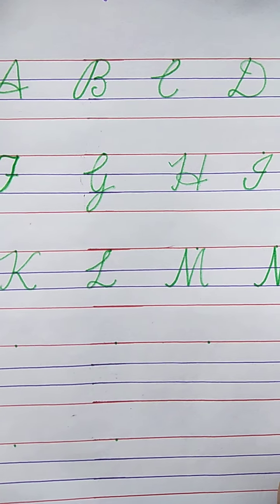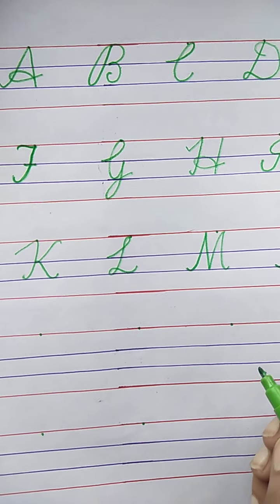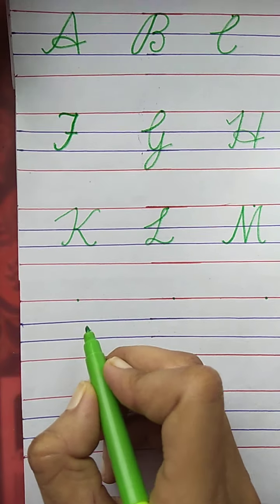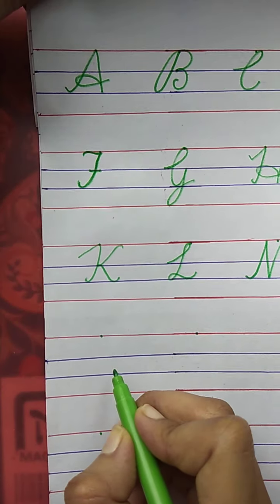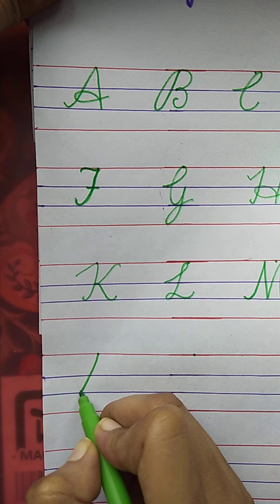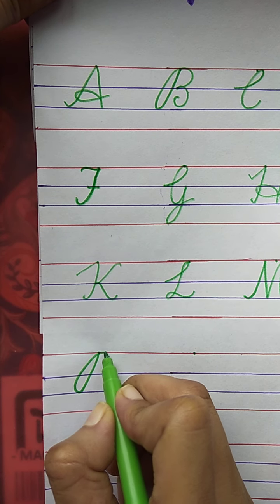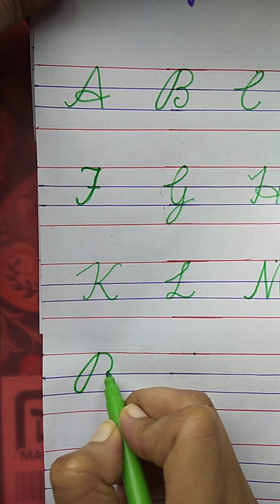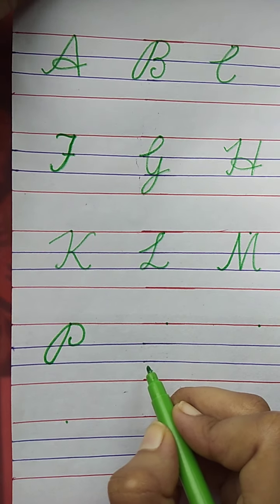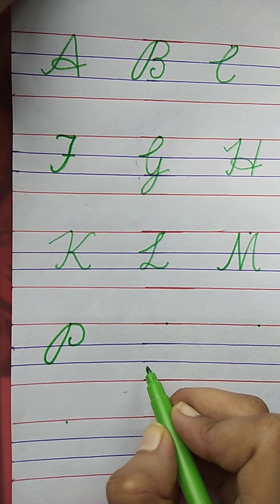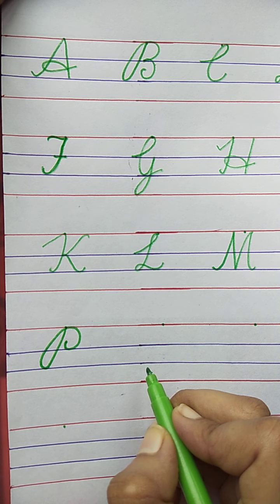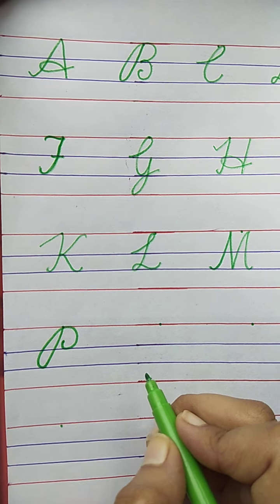Now, tell me the next letter. P. P for Peacock. See here. Slanting line, one more slanting line, semi-circle, and stop here. P for Peacock. The spelling of Peacock is P-E-A-C-O-C-K. Peacock.